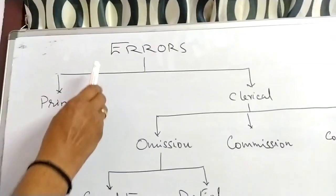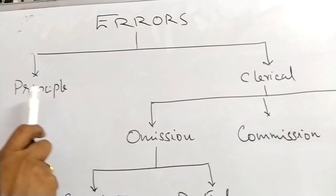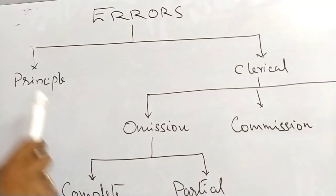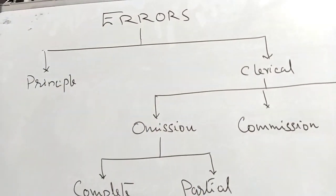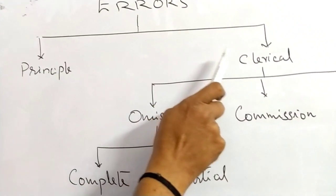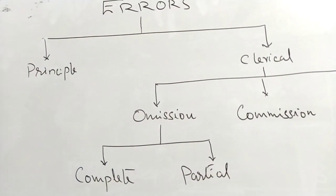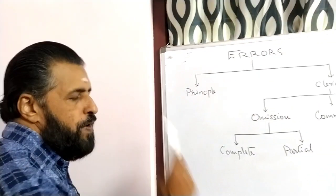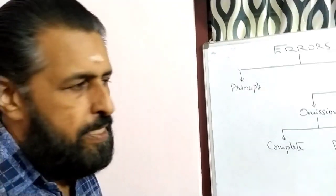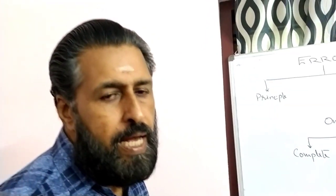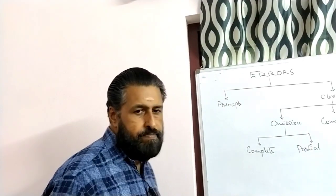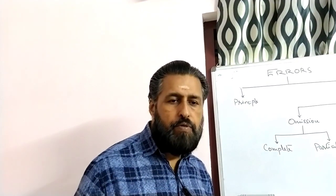Accounting errors are broadly divided into two categories: errors of principle and clerical errors. These are the two main types of accounting errors we need to understand.